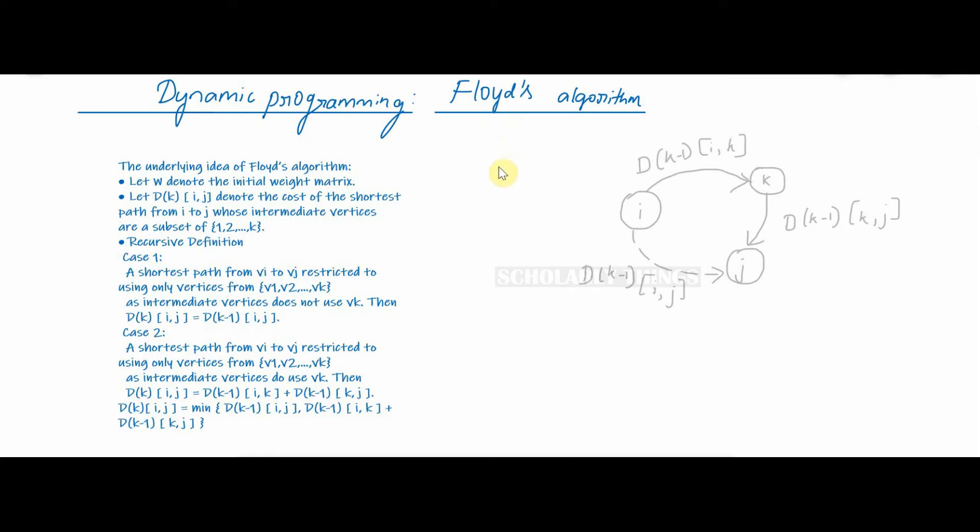Floyd's algorithm is one of the algorithms for solving all pair shortest path problem. On the kth iteration the algorithm determines the shortest path between every pair of vertices. There are two cases. A shortest path from vi to vj restricted to using only vertices from v1 to vk as intermediate vertices does not use vk. Then dk(i,j) is equal to dk-1(i,j).